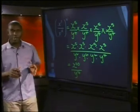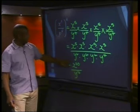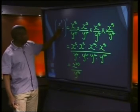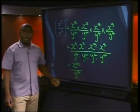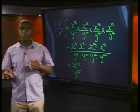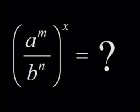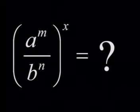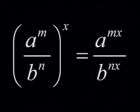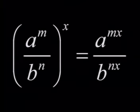Can you see that each power in the brackets is raised to the power outside the brackets? 5 times 4 gives us 20; 4 times 4 gives us 16. This is the same as in the previous example — when we raise a power to a power, we multiply the exponents. The general form of the rule is: a to the power of m, divided by b to the power of n, all to the power of x, equals a to the power of mx, divided by b to the power of nx.